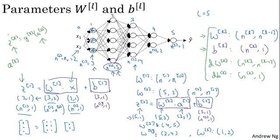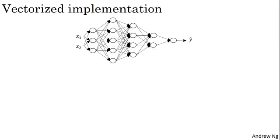But the dimensions of z, a, as well as x will change a bit in your vectorized implementation. So previously, we had z1 equals w1 times x plus b1, where this was n1 by 1, this was n1 by n0.